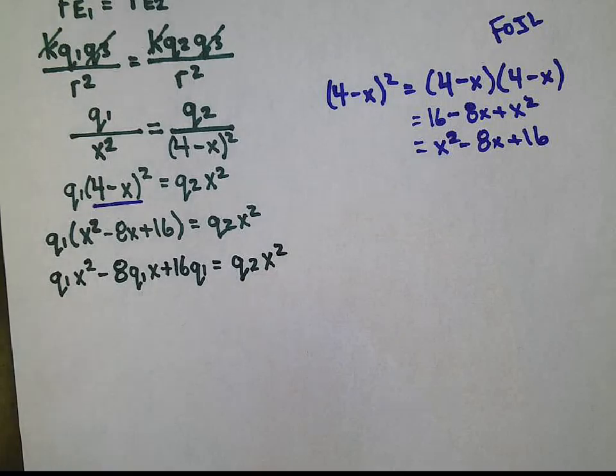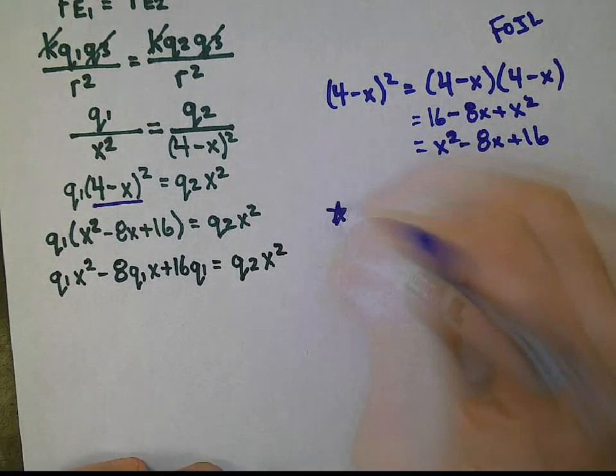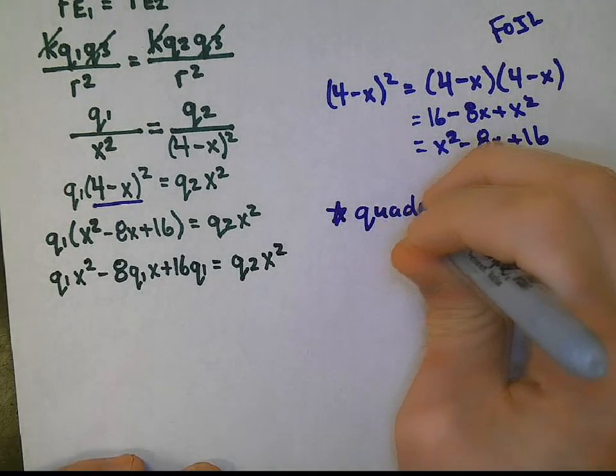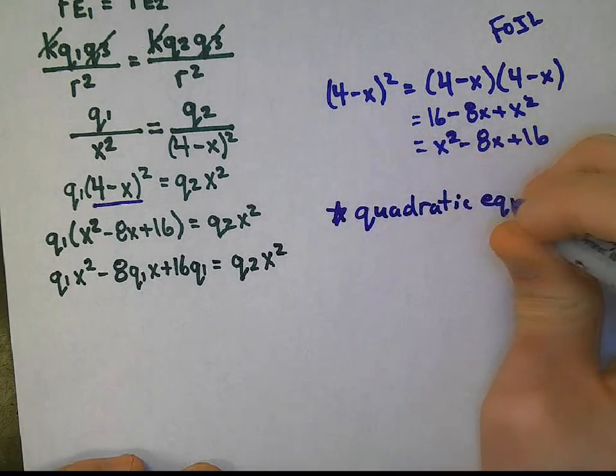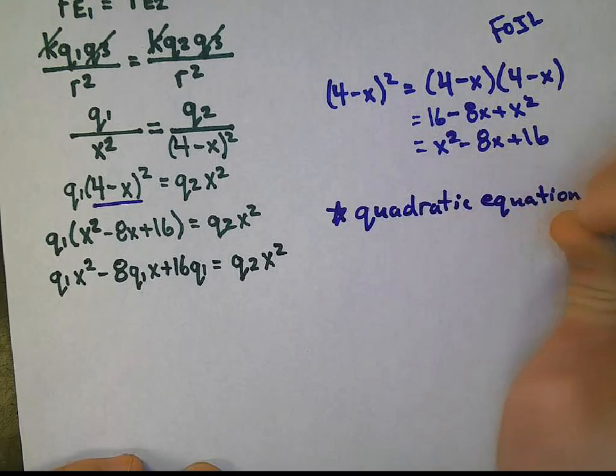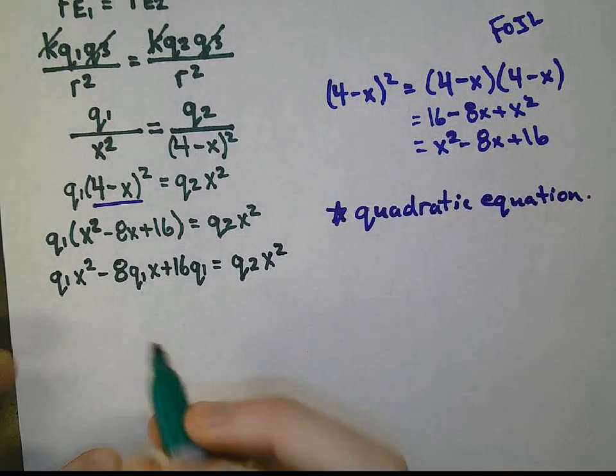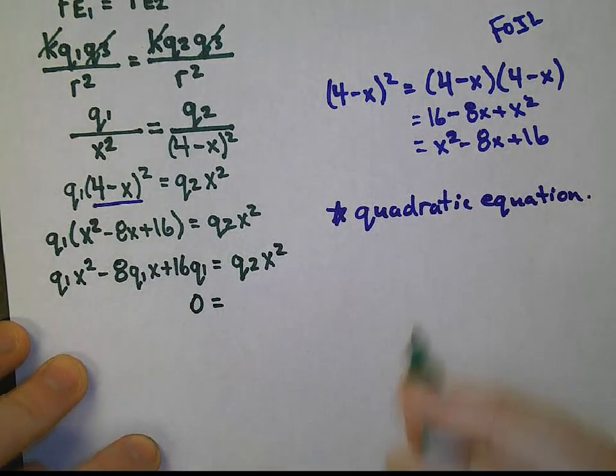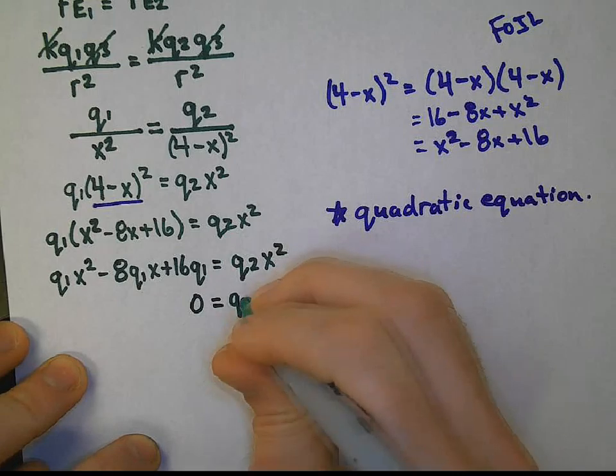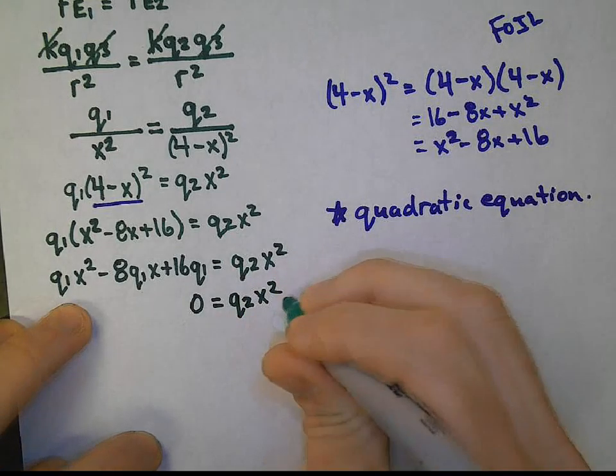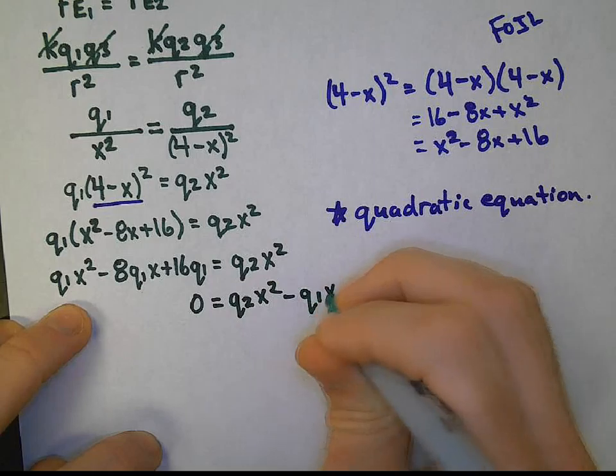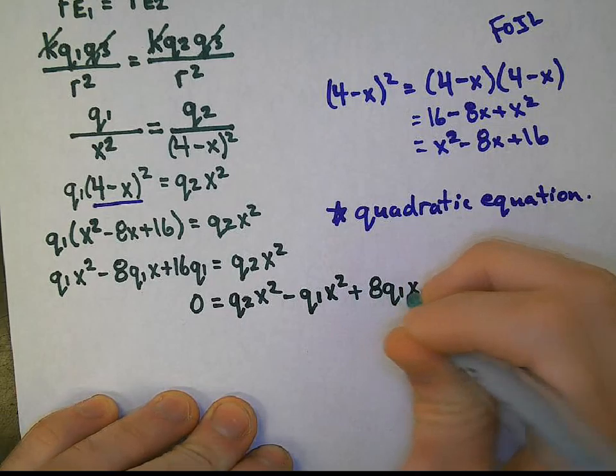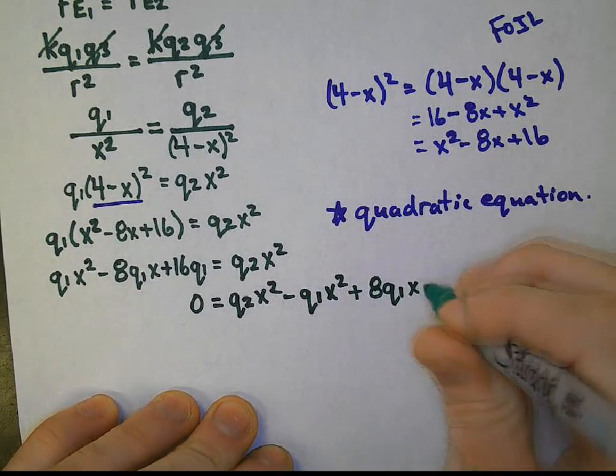As a little bit of a hint and preview, what our goal here is we're going to try to solve, all the way back from grade 10, a quadratic equation. And to do so, we're going to bring every single term to the right-hand side of the equal sign. So that's going to be Q2 x squared minus Q1 x squared plus 8q1 x minus 16q1.